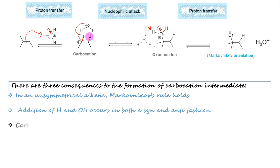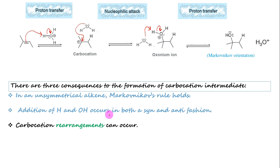Third consequence: since the carbocation is an intermediate, carbocation rearrangements will occur whenever possible. This has been discussed in detail in the lecture on hydrohalogenation of alkenes.